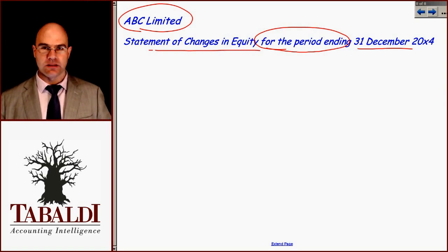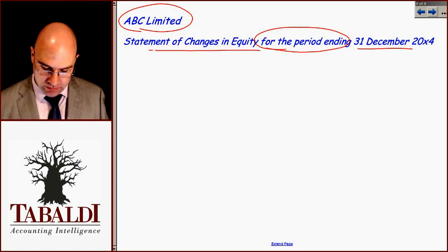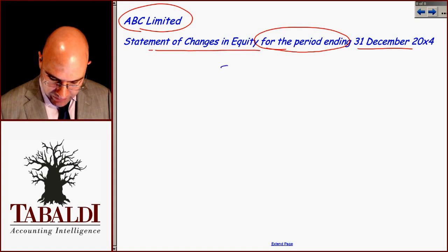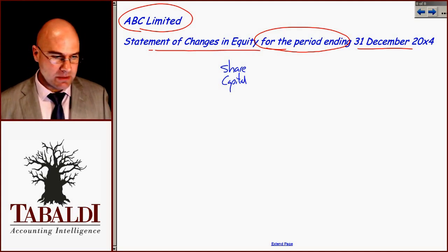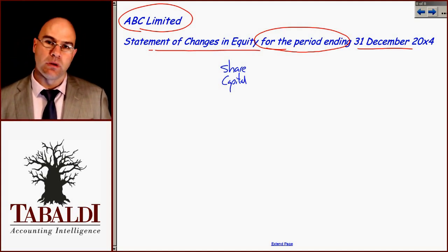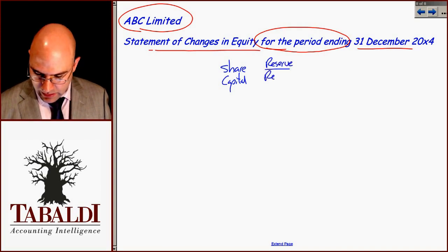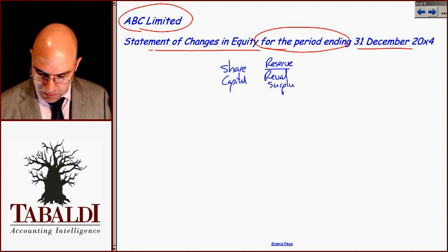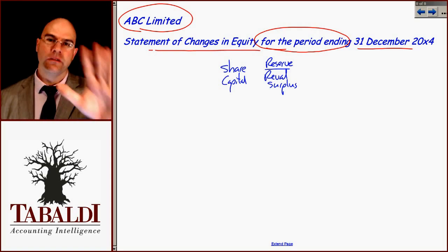This is going to be quite a different layout — I'm not going to have two columns down one side of the page, but I'm going to have multiple columns. Here I'll have all different types of equity: share capital, maybe another type of reserve — let's call it reserves, a revaluation surplus — the one we briefly mentioned. You're not going to really be tested on that; there's a whole bunch of them for future studies.